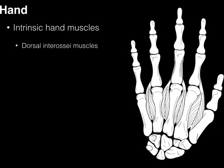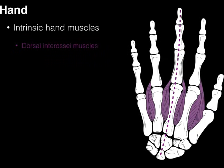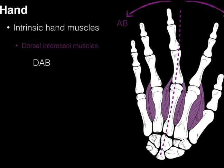Next are the interosseous muscles — there are two groups, dorsal and palmar. In purple, the dorsal interosseous muscles — there are four of them. The dotted line down the middle finger shows the midline used to define abduction and adduction. When the dorsal interossei muscles contract, they abduct — they pull the fingers away from the midline. Note that the pinky has its own abductor in the hypothenar muscles. The mnemonic is DAB: Dorsal interossei ABduct the metacarpophalangeal joints.